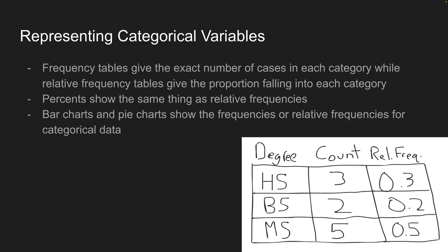Here's a relative frequency table. There's a degree column — high school, bachelor's, or master's. The first column is the degree, the second is the count of how many people in the sample had that degree, and the final column is the relative frequency. This is one way to represent categorical variables.